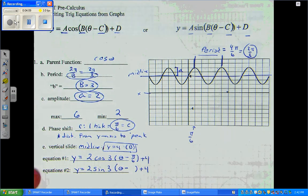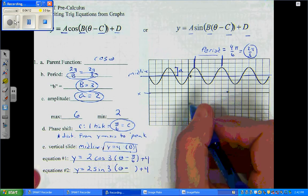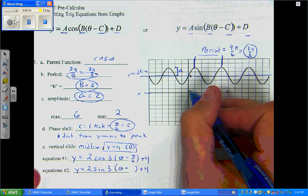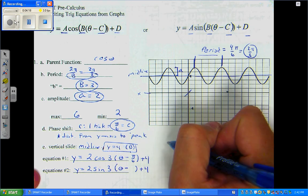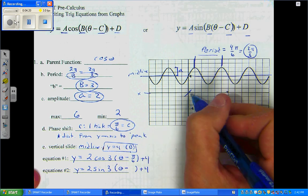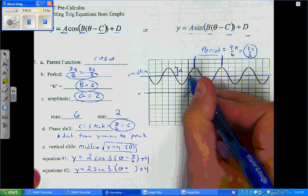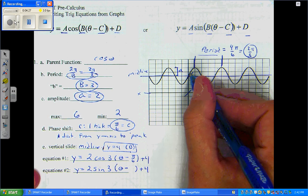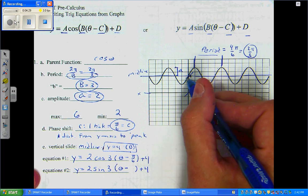To get the phase shift, we're going to look at our graph. Remember, sine, if you remember from yesterday and the day before, starts at the origin and goes up. So, I'm going to go up to my midline and find out where that happens. Look, right at my midline, I don't have to go anywhere.